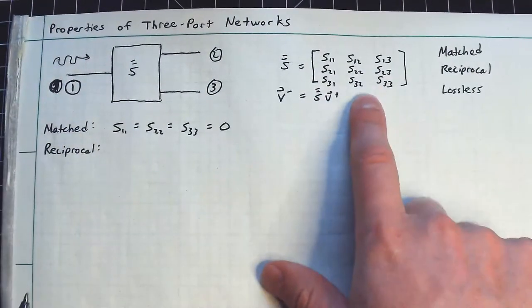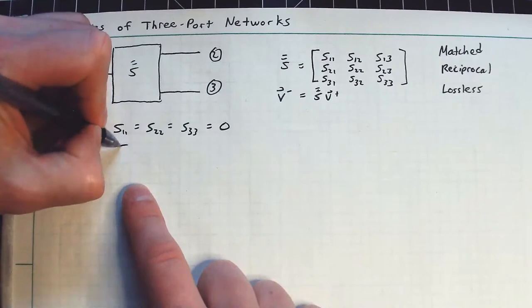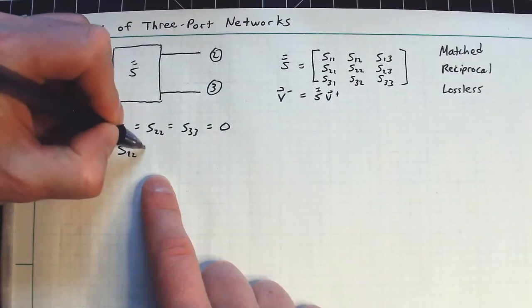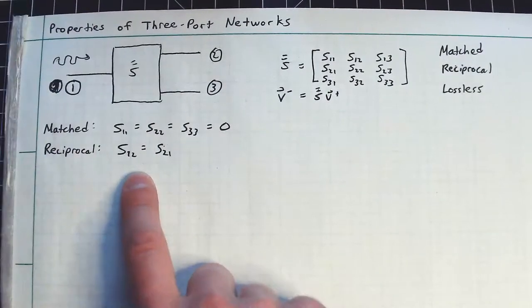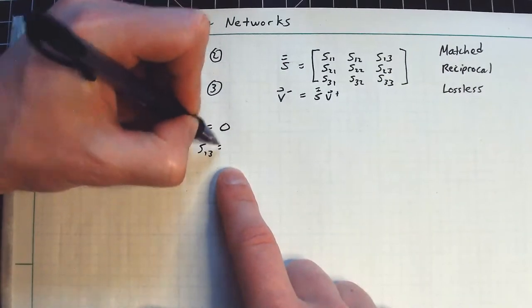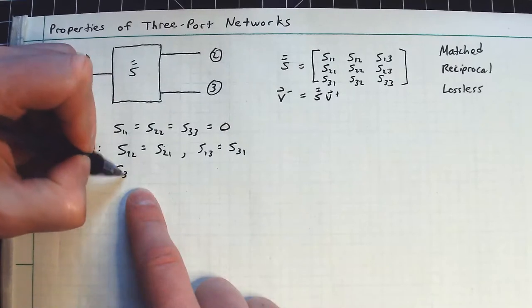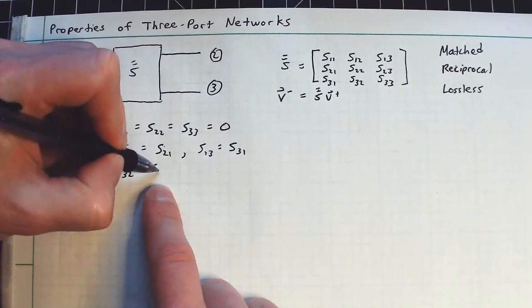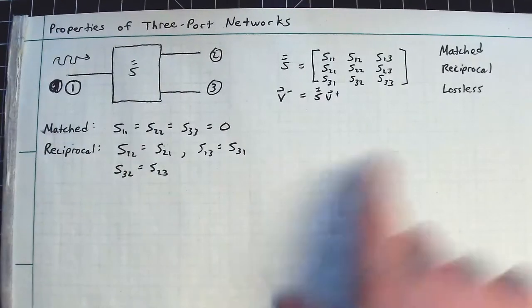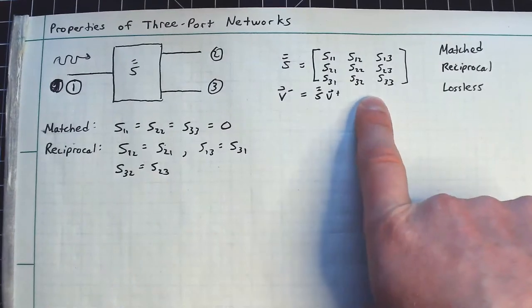So what that would manifest out here in this matrix would be something like S12 is equal to S21. That would imply S13 is equal to S31. And you would also have the condition that S32 is equal to S23. In other words, this matrix is equal to its own transpose.